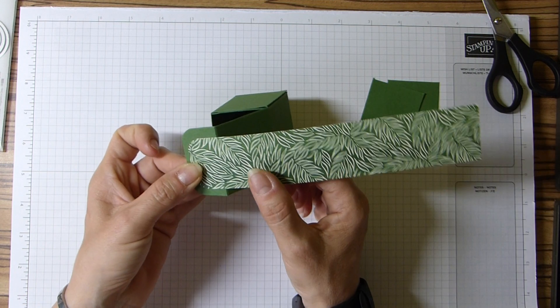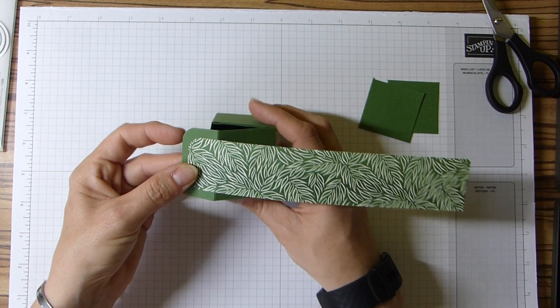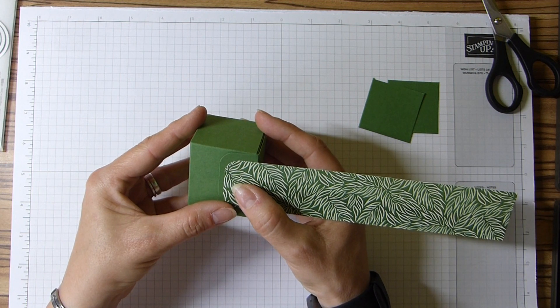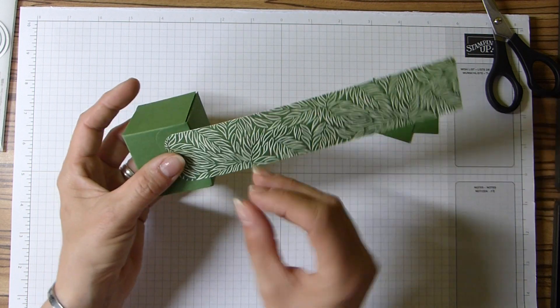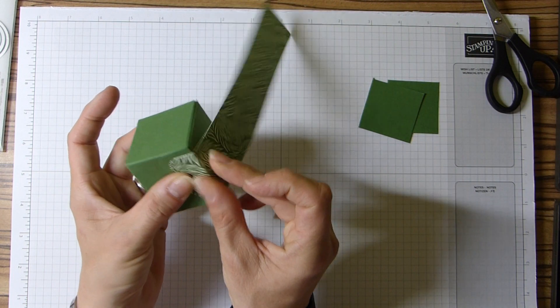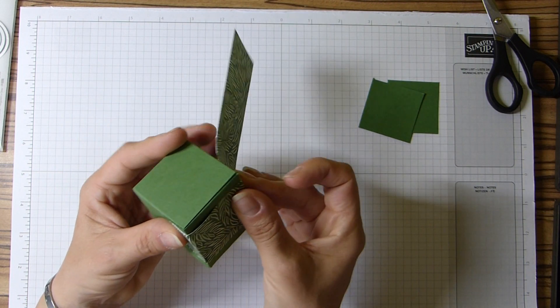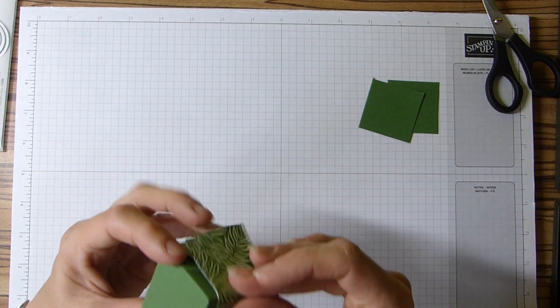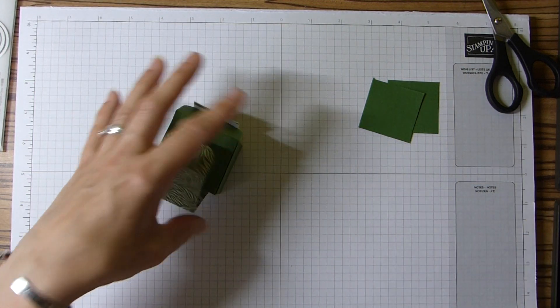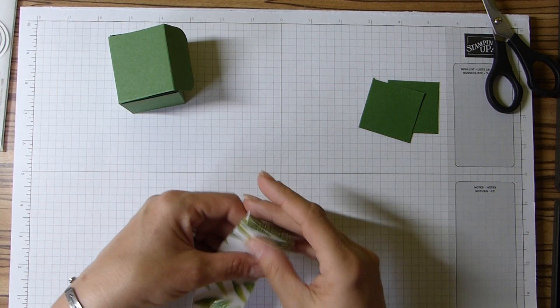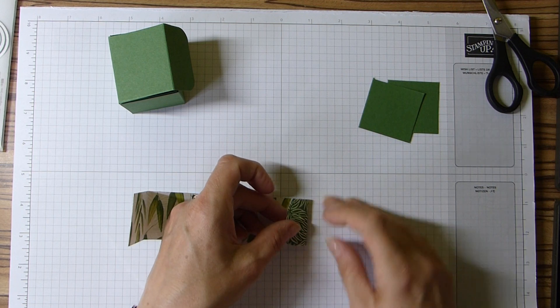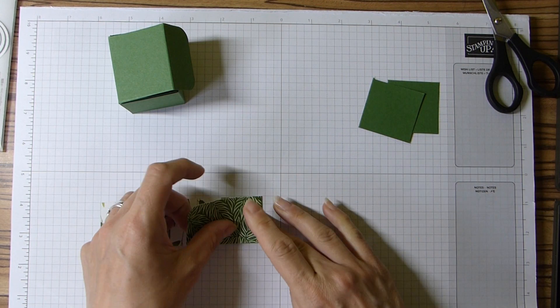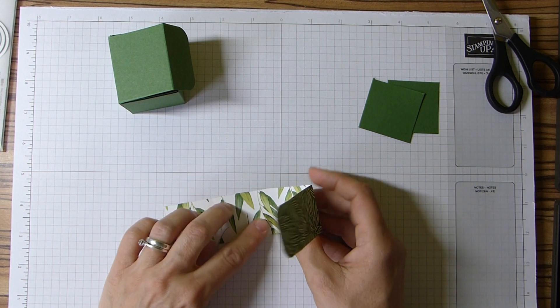So that's that done. And then what I'm going to do is place it on my lid to where I want it, and then I'm basically going to just fold it around my box, just creasing where those folds are. And then I'm just going to reinforce those folds, and yes, I am using my nail and not my bone folder, which is quicker.